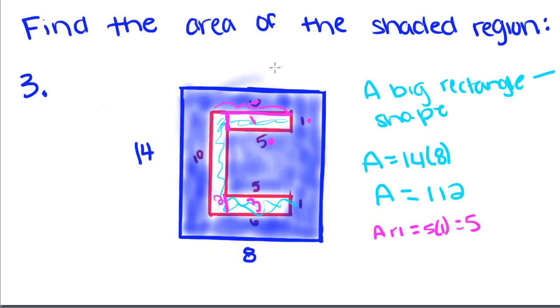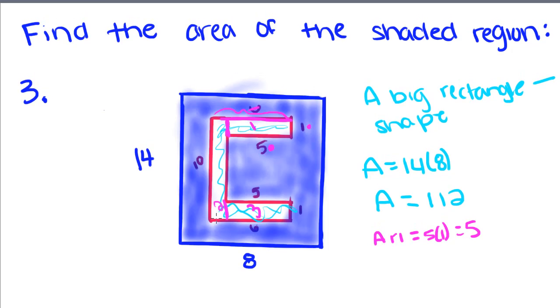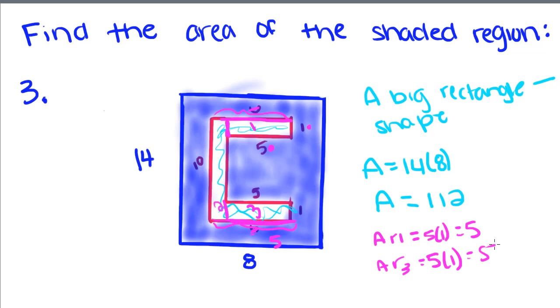Now, if you look over here, the area of this rectangle is going to be the same as the area of this rectangle. This 6, once again, is a 6 for this whole side. So we're going to ignore that, and we just want the 5 for this part of the side. So once again, we're going to get area of rectangle 3 equal to 5 times 1, which is 5.